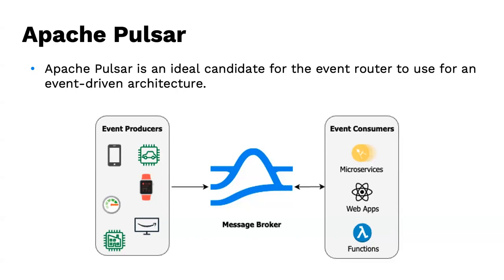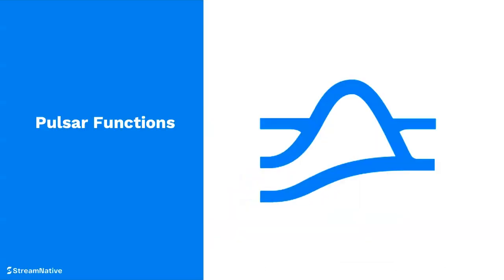Pulsar is horizontally scalable and solves latency and scalability issues that traditional message brokers have. RabbitMQ, for example, is not horizontally scalable — it has message retention limitations because of how it stores data on physical disks mapped to brokers. It doesn't scale horizontally without sharding and extra work. Pulsar solves these problems: build it once and you're done.